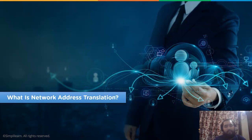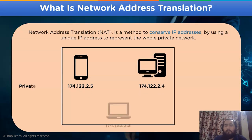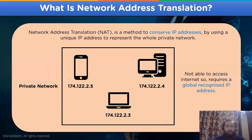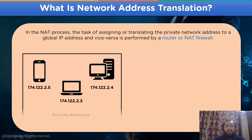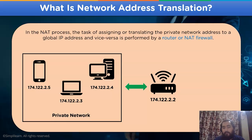What is Network Address Translation? The motive behind implementing NAT is to allow several network devices to connect to the Internet using a single public address. NAT is a method to conserve IP addresses by using a unique address to represent the whole private network. The public IP address is a globally recognized IP address used to access the Internet. The task of the NAT process is to translate a private IP address to a globally recognized public IP address, and vice versa.